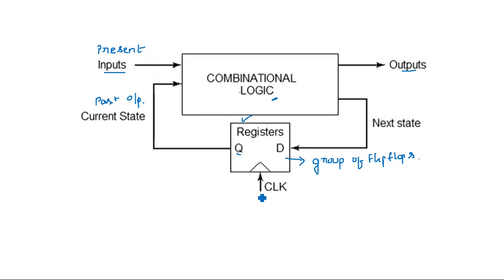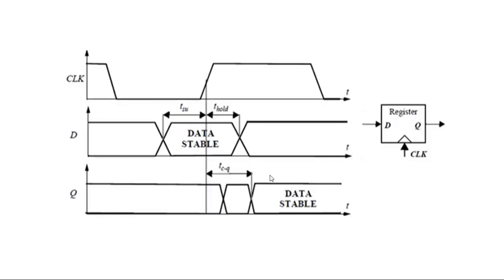So a sequential logic circuit depends on current inputs as well as past outputs. In order to store this past output we use a memory element — a flip-flop for one bit, or a register for multiple bits. A flip-flop must definitely have a clock signal.